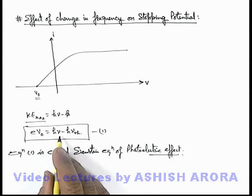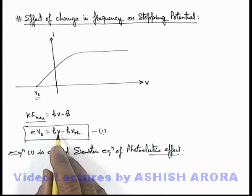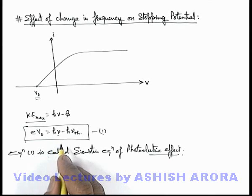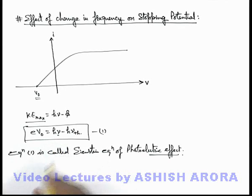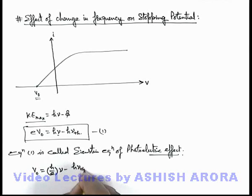Now here we can see that stopping potential mainly depends on the frequency of incident radiation. So here if we rewrite this equation it can be written as stopping potential is equal to h by e, nu minus h nu threshold by e. Here you can see that stopping potential is linearly dependent on the frequency of incident light, so this equation can be compared as y is equal to mx plus c.